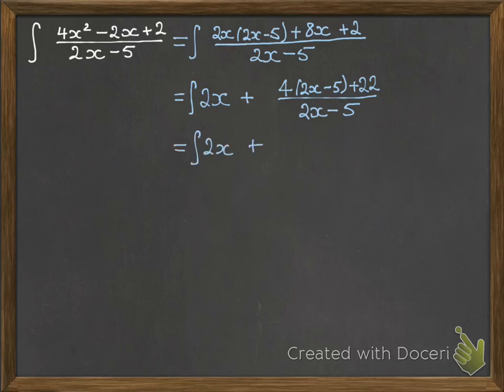Again, we go through and we cancel. So we're left with just the 4, and then a 22 over 2x minus 5 dx. Now this is at a point where we can integrate every one of those terms. We've kind of simplified it down into pieces that we can deal with.